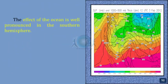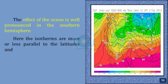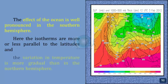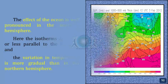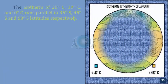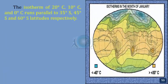The effect of the ocean is well pronounced in the southern hemisphere. Here, the isotherms are more or less parallel to the latitudes and the variation in temperature is more gradual than in the northern hemisphere. The isotherm of 20 degrees centigrade, 10 degrees centigrade, and 0 degrees centigrade runs parallel to 35 degrees south, 45 degrees south, and 60 degrees south latitudes respectively.